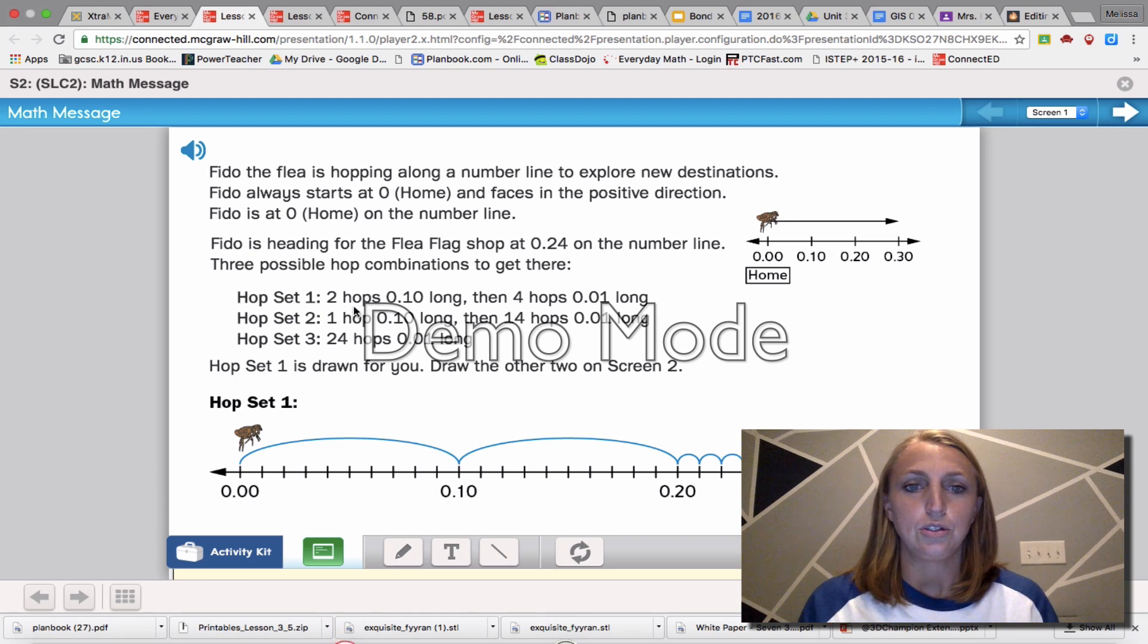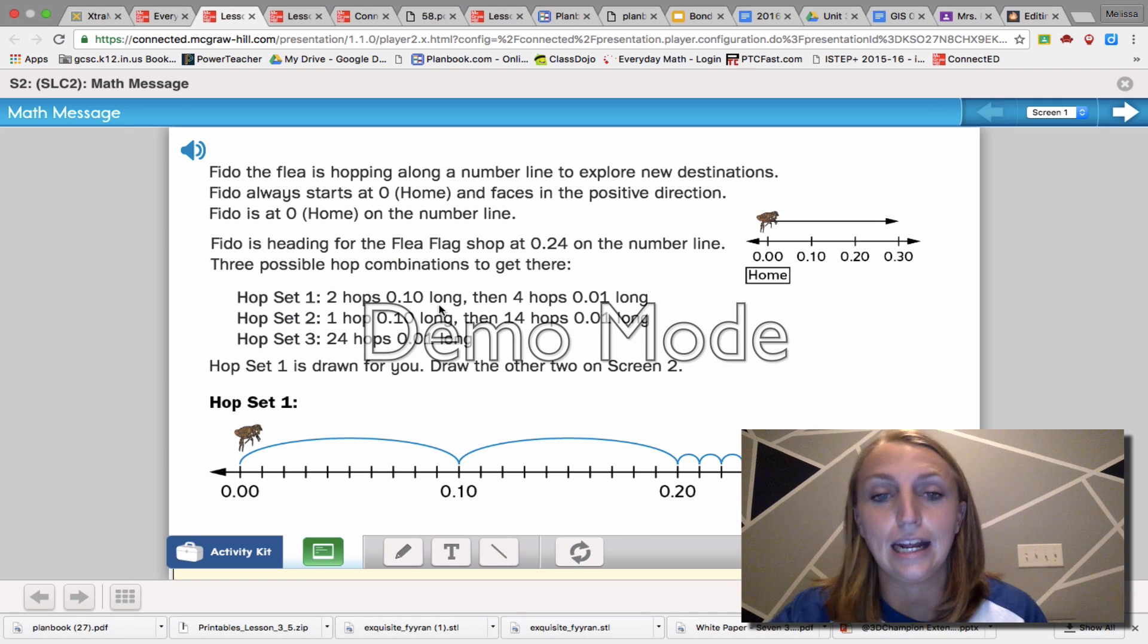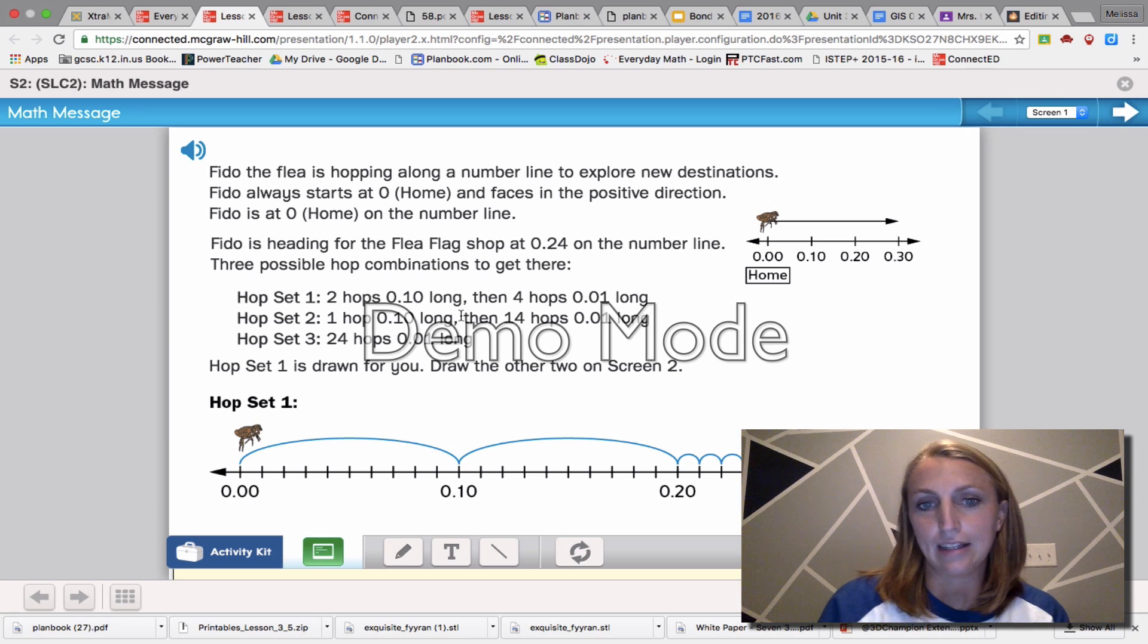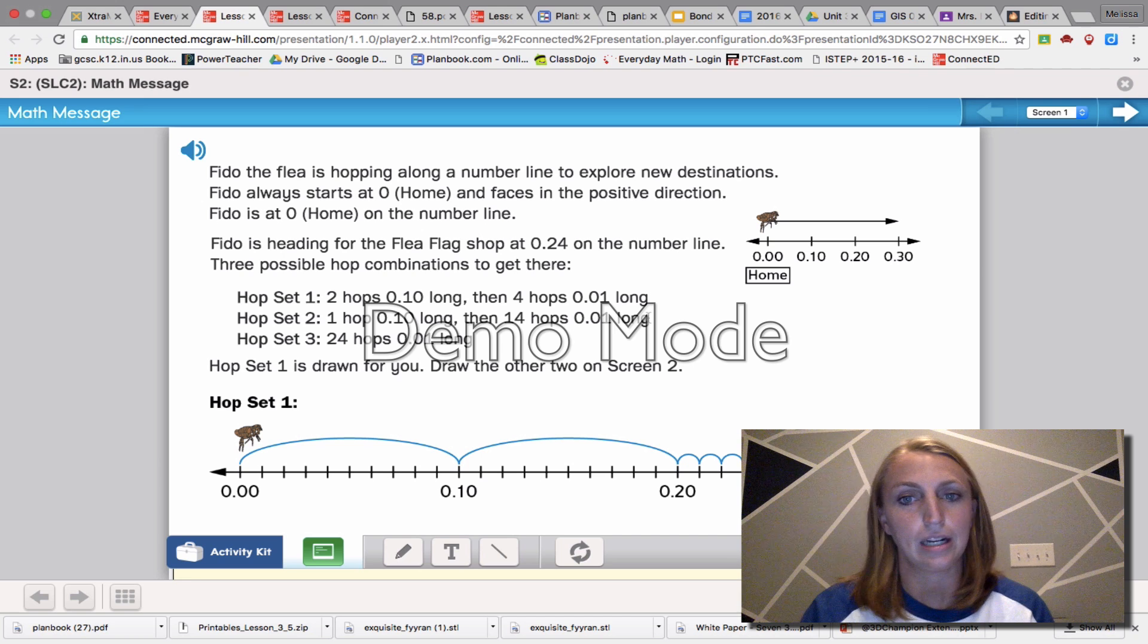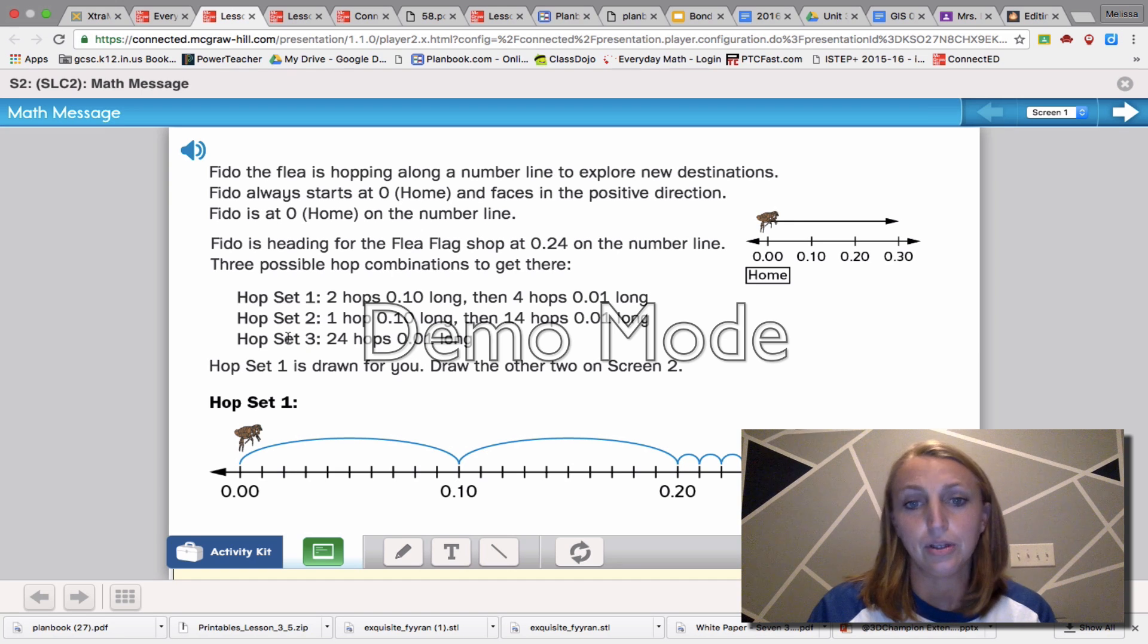Hop set 1: two hops at one tenth or ten hundredths long, and then four hops at one hundredths long. Hop set 2: 14 hops at one hundredths long. And hop set 3: 24 hops at one hundredths long. Hop set one is drawn for you. Draw the other two on screen too, or in your book on the bottom of the page.